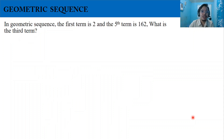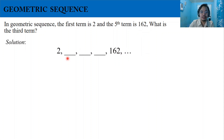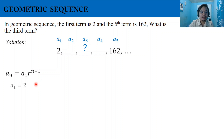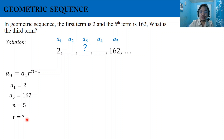For the next example: in a geometric sequence, the first term is 2 and the fifth term is 162. What is the third term? The second, third, and fourth terms are unknown. Using the formula, the given values are: a sub 1 equals 2, a sub 5 equals 162, n equals 5, and we need to find the common ratio r.